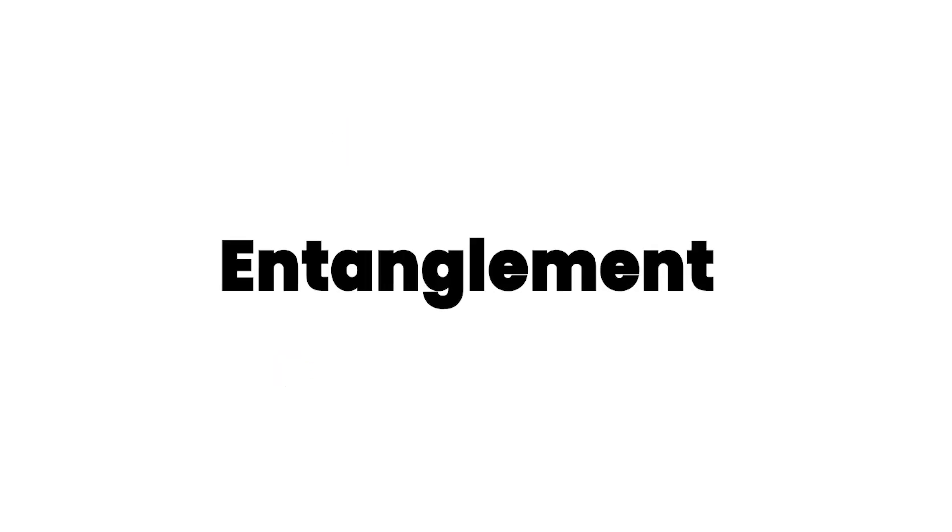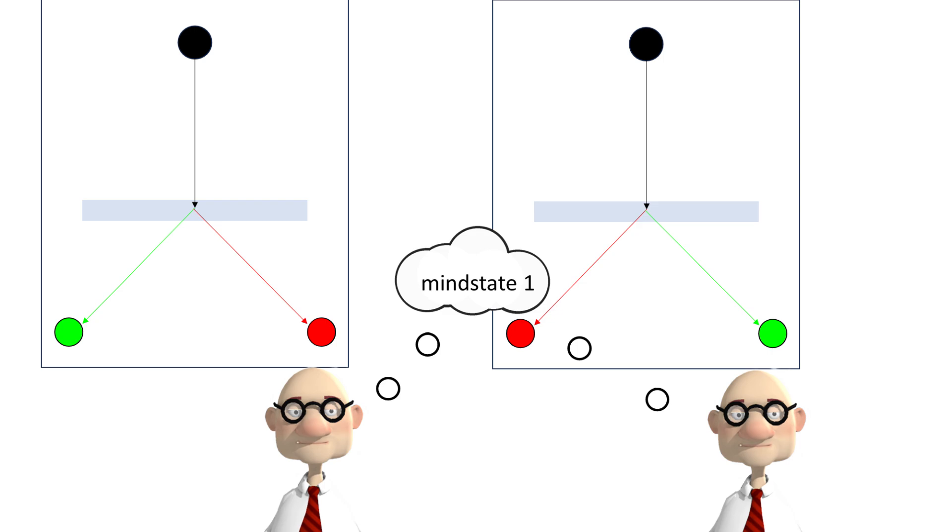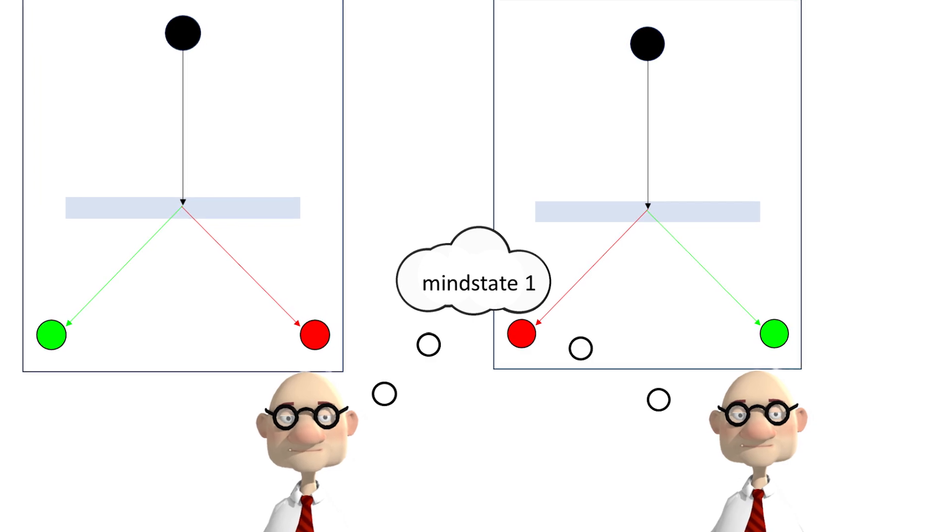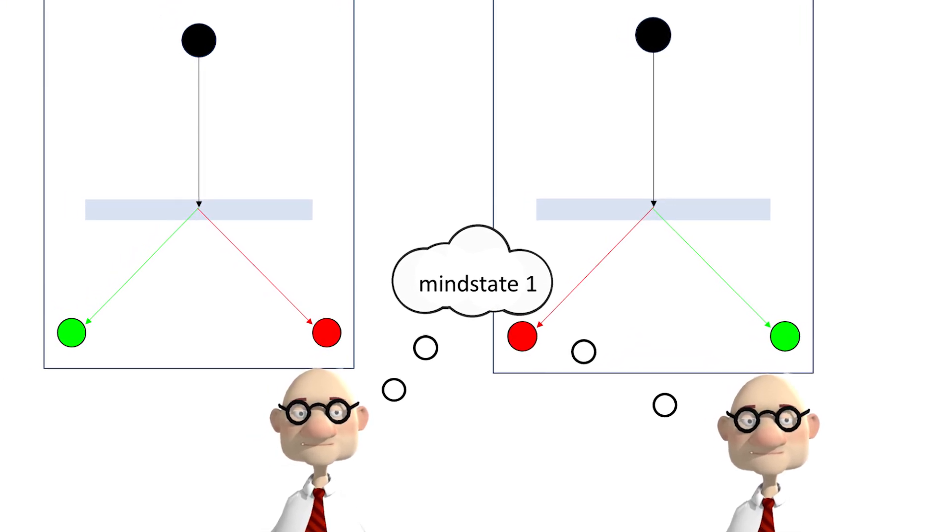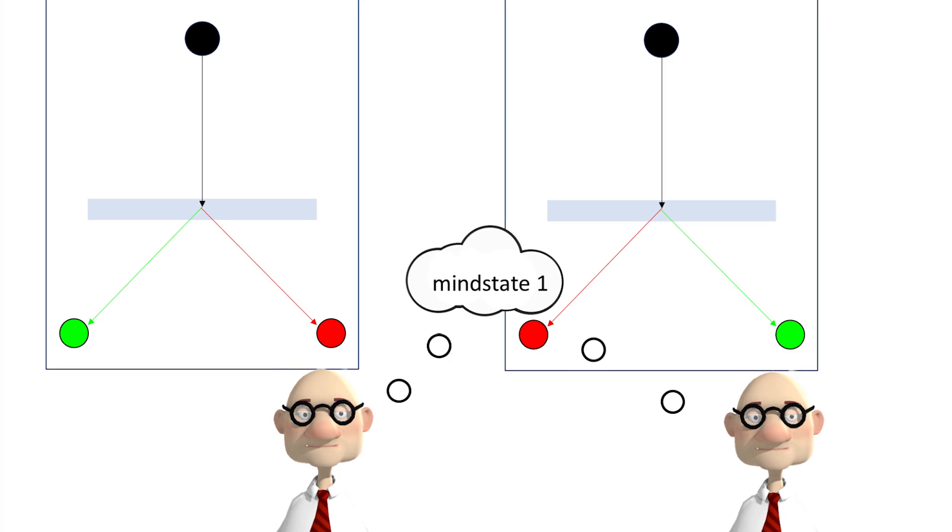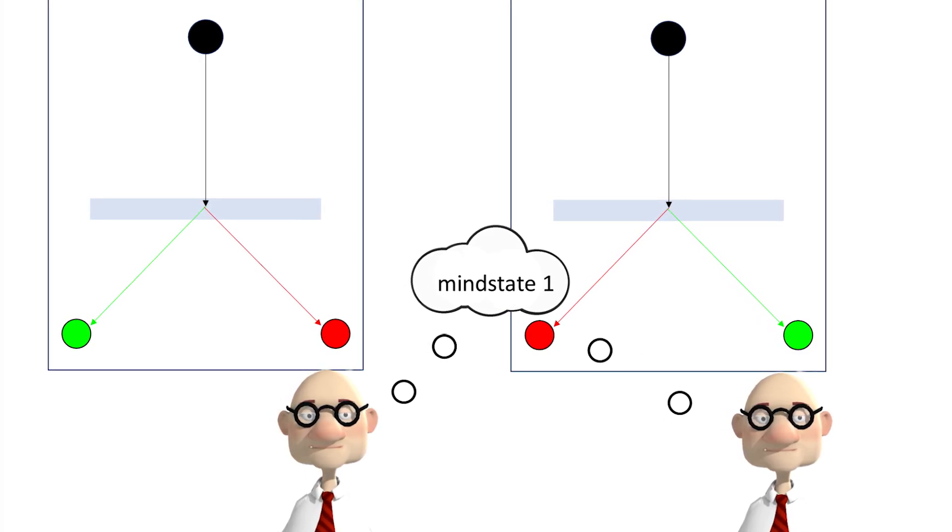Let's first talk about entanglement. Here we shoot a black particle at a device that splits into two particles, a green one and a red one. In one timeline the green flies off to the left, in the other the other way around. We're showing two observers, perfect copies of each other in two timelines.